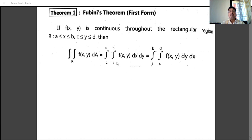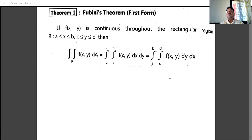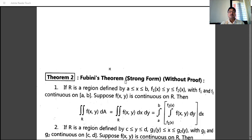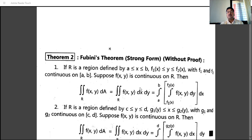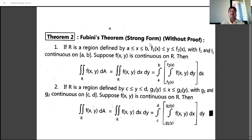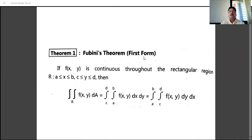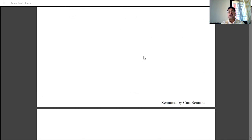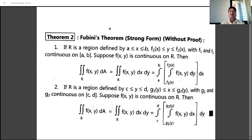If the limits are constant, we can integrate with respect to x first or y first — that is the weak or first form of Fubini's theorem. But if the limits are not constant, Fubini's theorem takes its strong form. In the strong form, the region R is defined by a ≤ x ≤ b and f1(x) ≤ y ≤ f2(x), meaning the limits of y are functions of x, not constants.